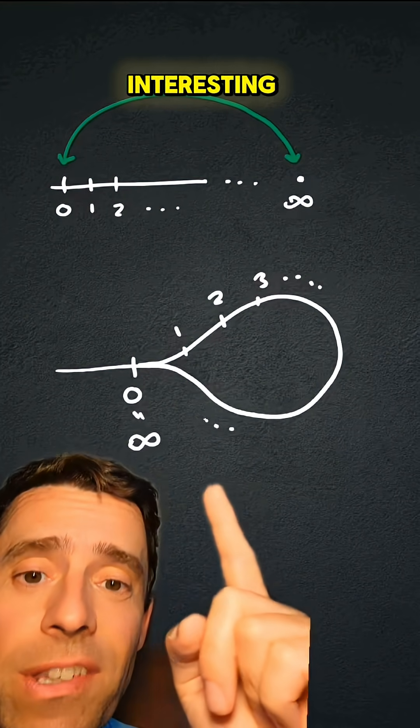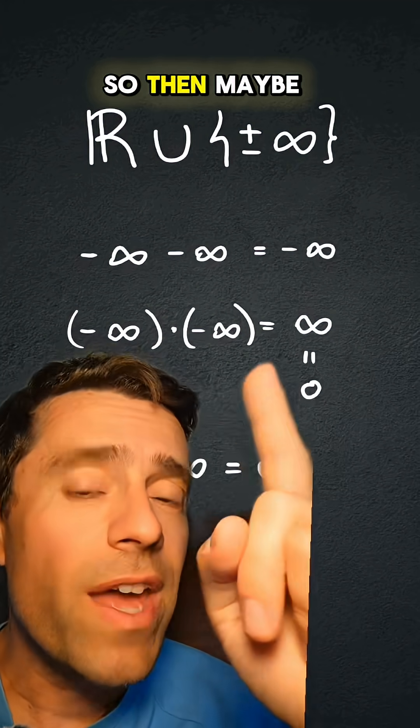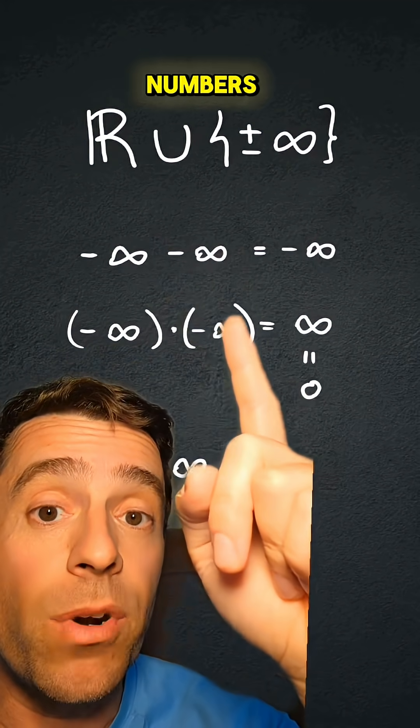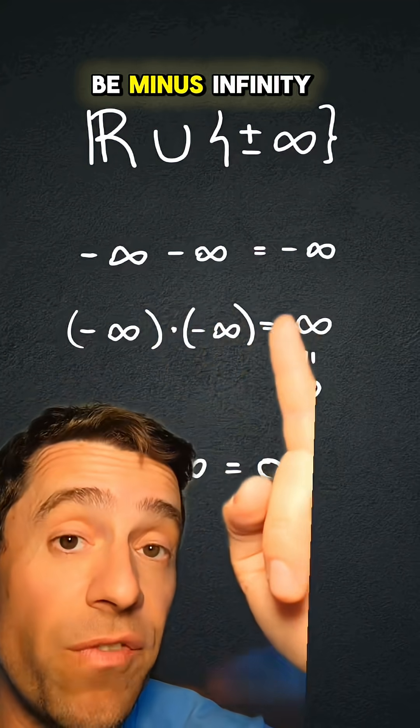Oh, but this is interesting because now this looks like one of the sides of the infinity symbol. So then maybe we should also add minus infinity to the real numbers, in which case minus infinity minus infinity would be minus infinity,